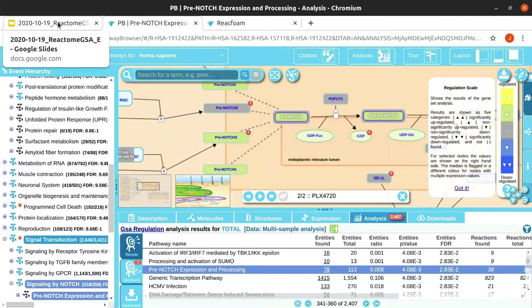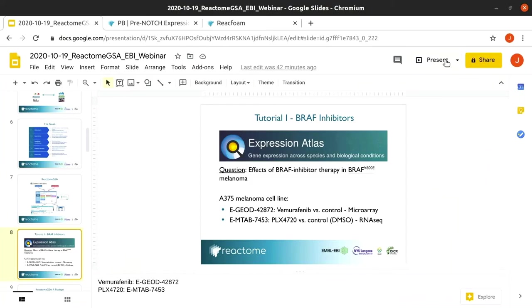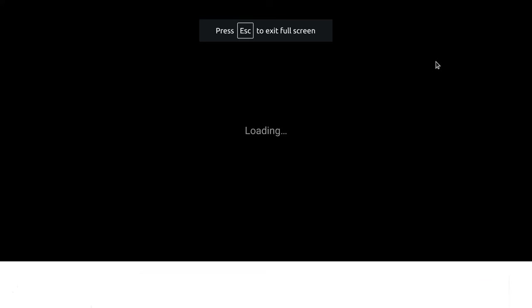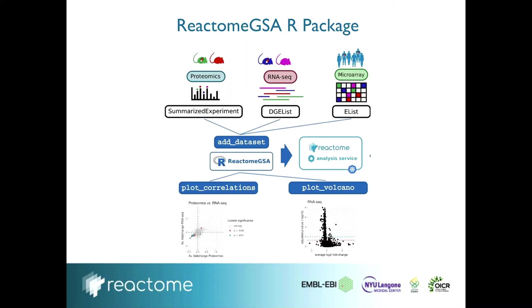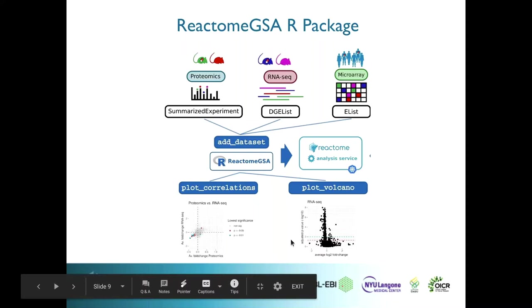Now moving to the ReactomeGSA R package. It's available in Bioconductor and supports common omics data models and objects: SummarizedExperiment, DGEList from edgeR, and EList from limma. All are supported by the central 'add_dataset' function. It works the same as the web interface, sends data to our analysis service, and provides plotting functions - the correlation plots and volcano plots from the PDF report can be reproduced directly in your R session.